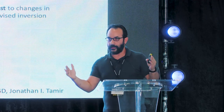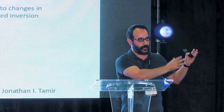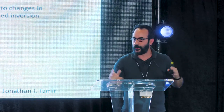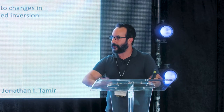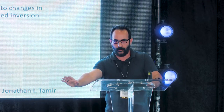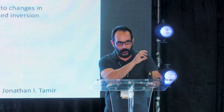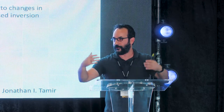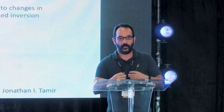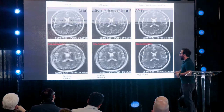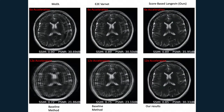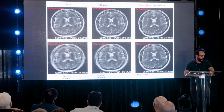Our model separates the physics of the acquisition process from the physics of the anatomy you're trying to learn, whereas end-to-end black-box models learn both in the same neural network. This separation offers more trust and robustness. Our NEURIPS 2021 results show we produce better images at 6x and 12x acceleration compared to very competitive cutting-edge methods.